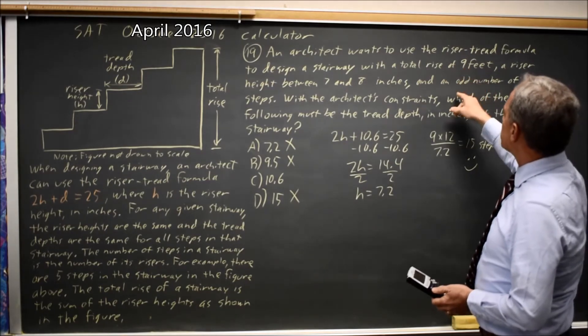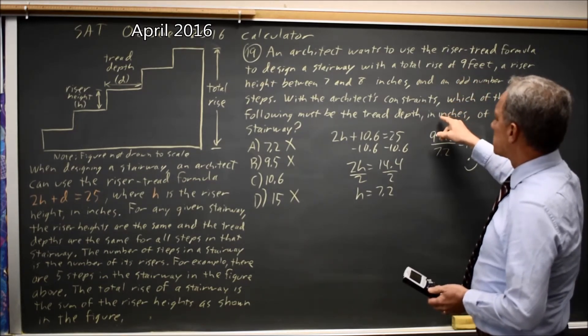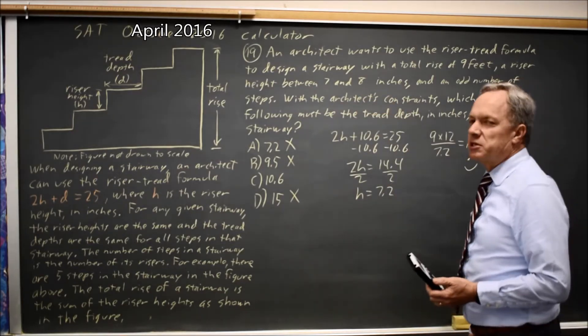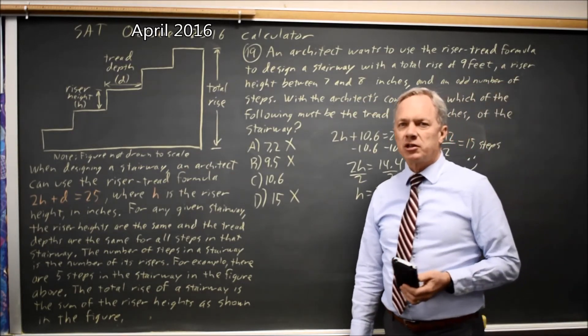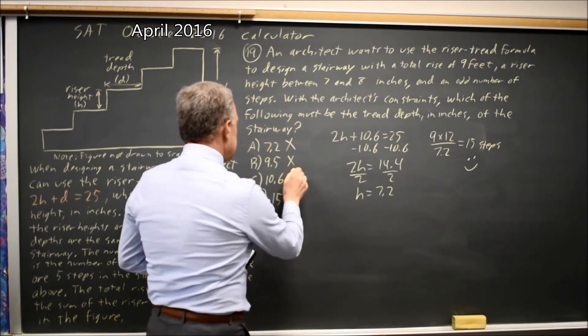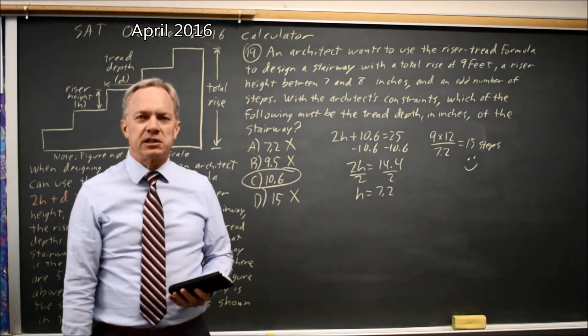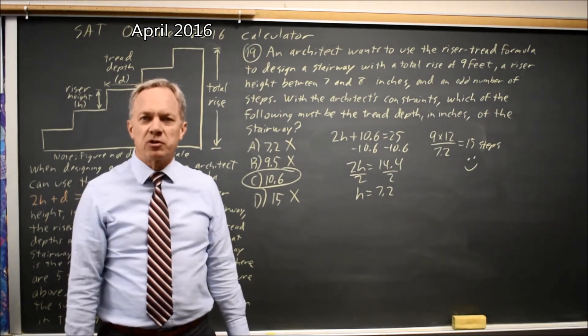Which is an odd number of steps. So I have a total rise of 9 feet, an odd number of steps, and the riser height is 7.2, which is between 7 and 8. So I've met all of the architect's criteria. Choice C is the only choice that meets all of those criteria. So that would be the correct answer.